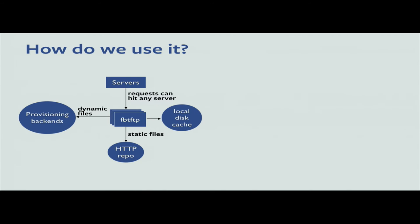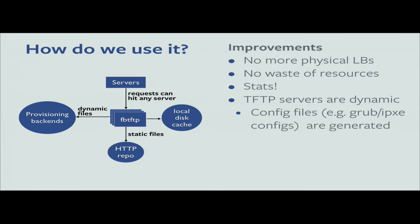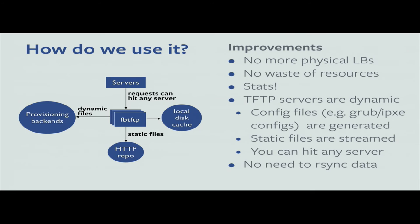When a request comes in, we use regular expressions. If it matches a static file, we stream it from the closest HTTP repo. If it's a dynamic request — like a configuration file — we make backend calls to our systems to get the information needed to build the file response object, which is dynamically generated. The improvements: no more physical load balancers, no waste of resources, any machine can serve traffic. We now have stats with fancy dashboards. The TFTP servers are dynamic — config files for GRUB and iPXE are automatically generated, static files are streamed, and you no longer need to synchronize 7 gigabytes of data. It's container-friendly — just take the binary, put it in a container, and it runs.